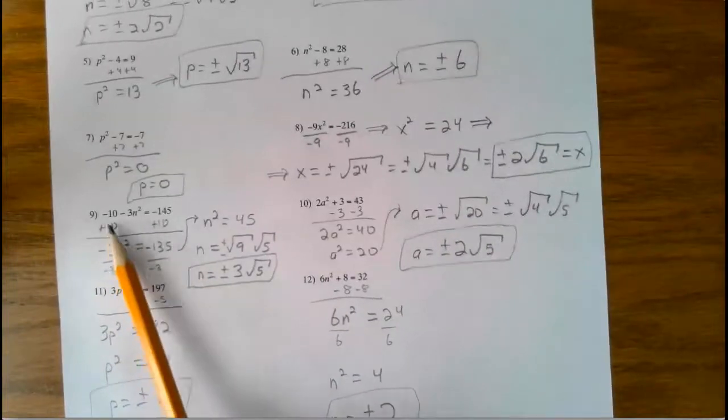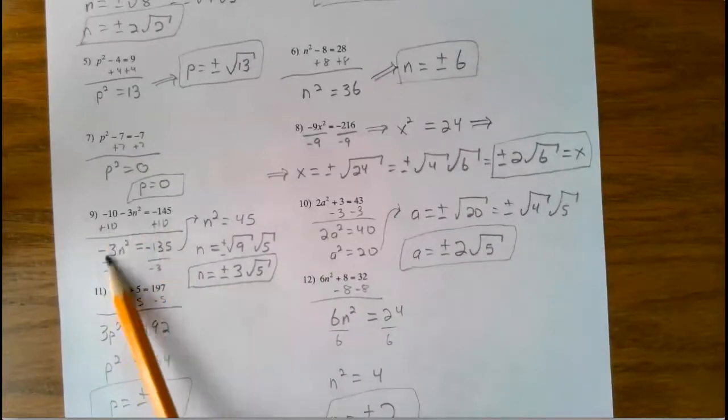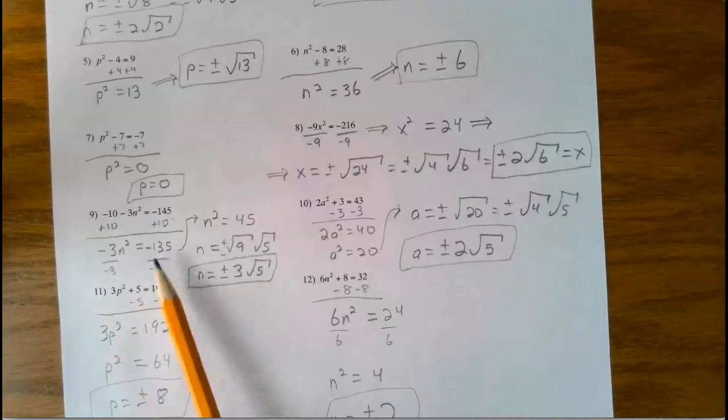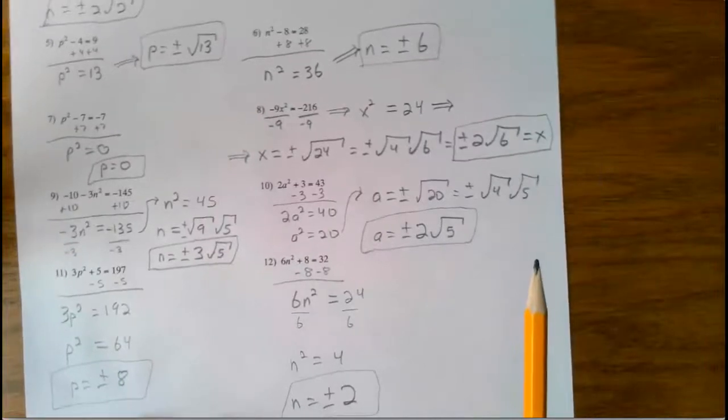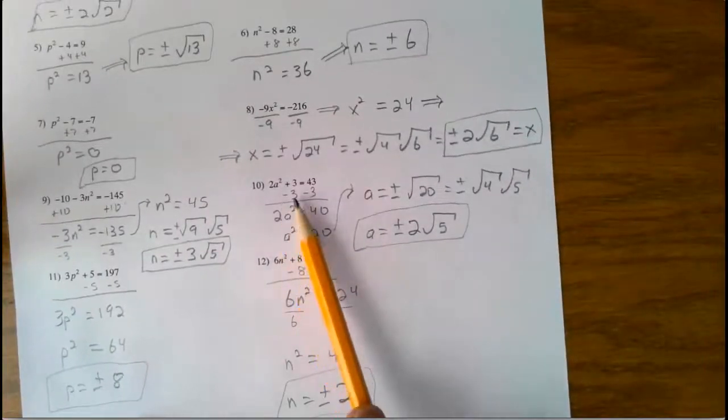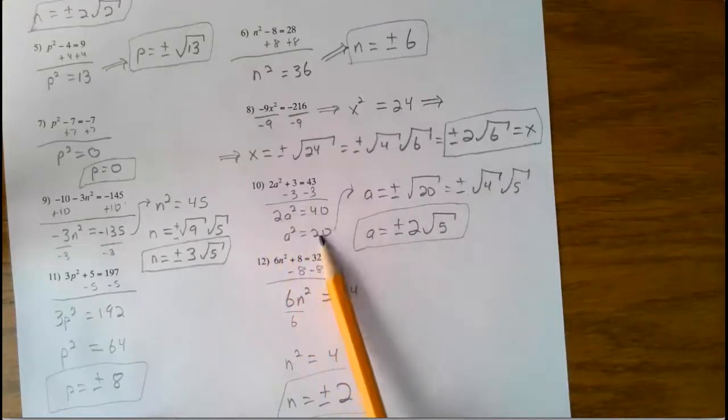This is the 2-steppers. Add 10 to both sides, and then divide both sides by negative 3. Came up to 45. Took the square root of both sides, and that's what I got. Same with this one, the 2-stepper. Added, or subtracted 3 from both sides, and then divided both sides by 2. Squared to 20.